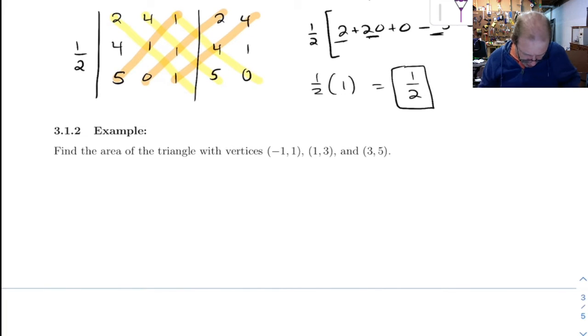Okay, let's do one more. Find the area of the triangle with these vertices. All right, so again, we'll do one half times the x coordinates there, y coordinates here, and it's important to keep them in order, and 1, 1, 1.